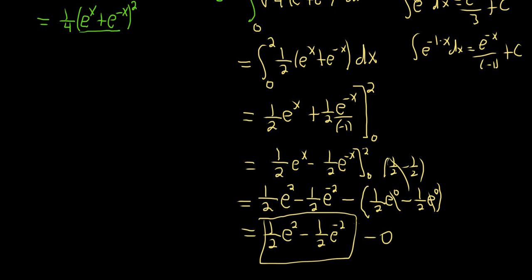Typing this into a calculator: 1/2 times e squared minus 1/2 times e to the negative 2 gives approximately 3.627. So to two decimals, the arc length is approximately 3.63, and to three decimals it's 3.627. That's the arc length.